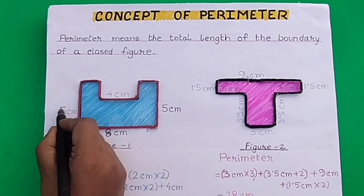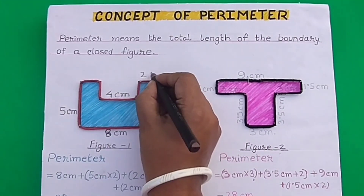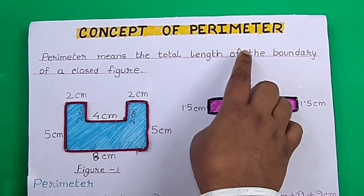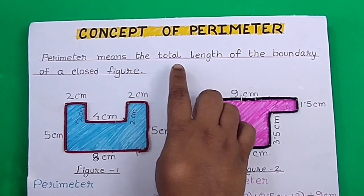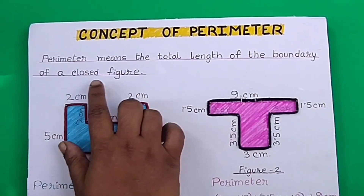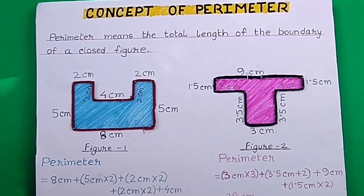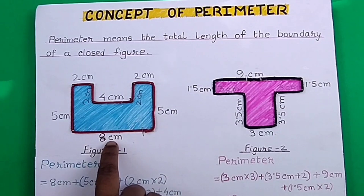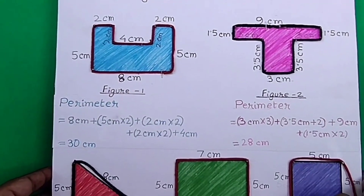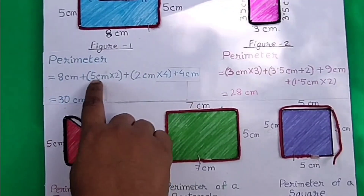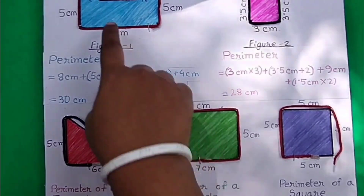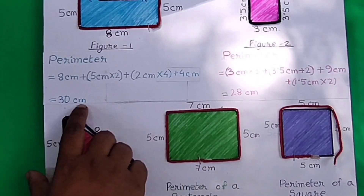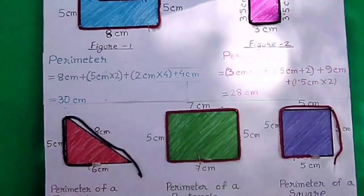A tisket, a tasket, a green and yellow basket. I wrote a letter to my love and on the way I dropped it. Concept of perimeter: perimeter means the total length of the boundary of a closed figure. Two figures are shown here. Figure 1 has a total of 8 sides which we add to find out the perimeter. One side is 8 cm, two sides are 5 cm, four sides are 2 cm, and one side is 4 cm. By adding the length of all sides, we get the perimeter which is 30 cm.